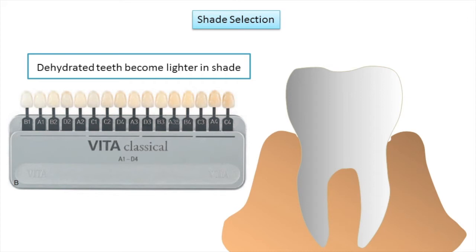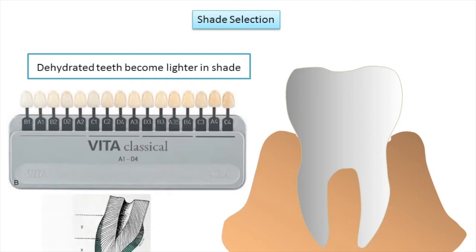Shade selection should be made quickly, within 30 seconds, because of physiological limitations of color receptors in the eye which make it difficult to distinguish between similar colors after 30 seconds. In complex situations, a combination of shades can be used. For example, three different shades may be used: Y shade corresponds to the cervical region, X shade to the middle region, and W shade to the incisal or occlusal region, which is typically lighter than the rest of the tooth.